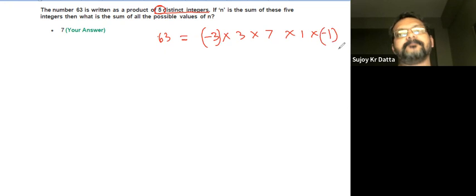These are the five numbers that we have. Now as we can see, one of these two would always repeat and one of these two will always repeat if I keep them positive, so there is actually no other way in which we can write down 63 as a product of five distinct numbers.